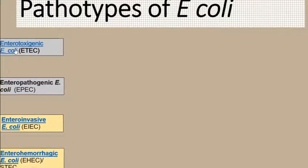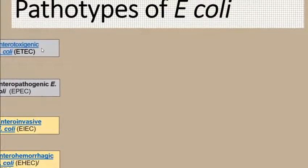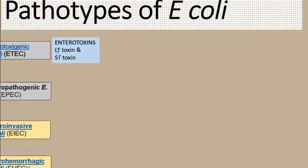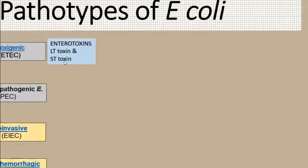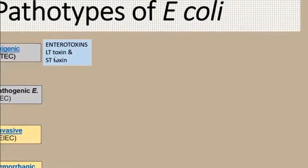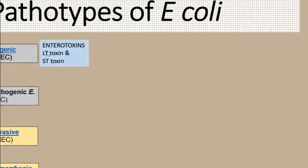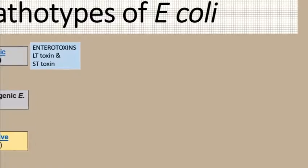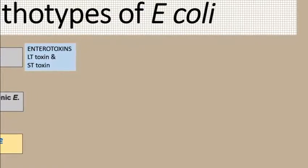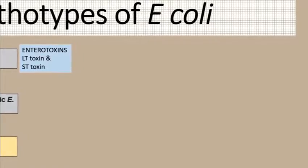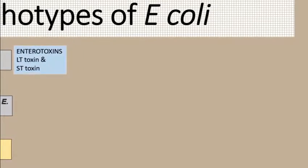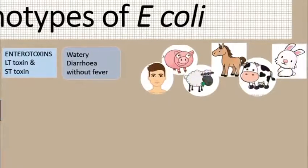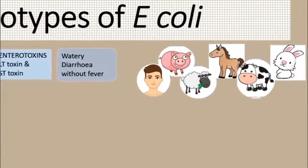Enterotoxigenic E. coli — enterotoxigenic means they are producing toxins. They produce two types of enterotoxins: heat-labile toxin and heat-stable enterotoxin. The heat-labile toxin has two subunits, A and B. The B subunit helps in the attachment of the toxin to the epithelium, and the A subunit actually inhibits the absorption of water and causes diarrhea. It causes watery diarrhea, mostly without any fever, and it affects many species including human, pig, and rabbit.